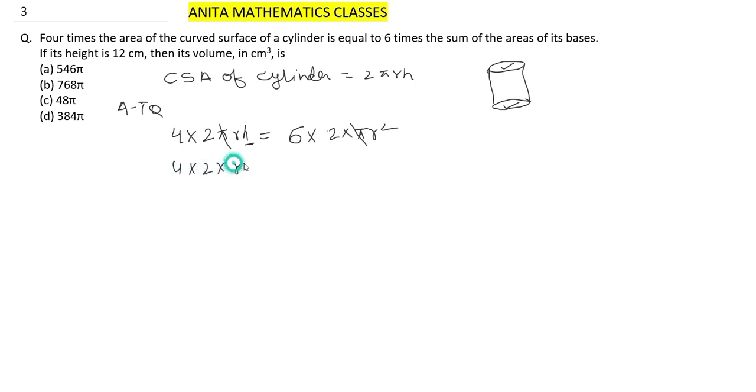2 into r into 12 equals 12r². 12 cancels out, that means r equals 8 cm.